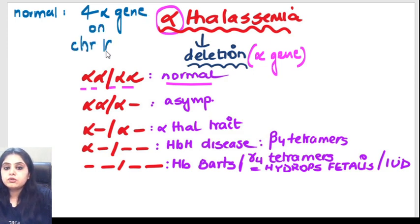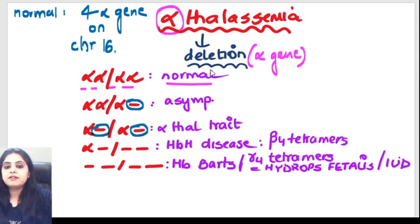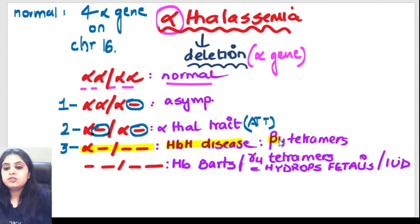These four alpha genes are present on chromosome number 16. Four alpha genes is a normal situation. If one goes missing, the person is asymptomatic. If two are deleted, it's alpha thalassemia trait. If three are deleted - that is where this image of the day comes in - it results in HbH disease.